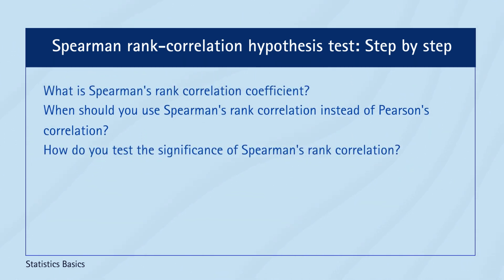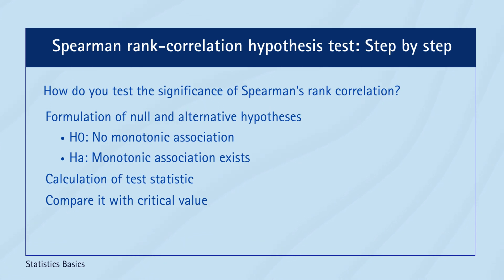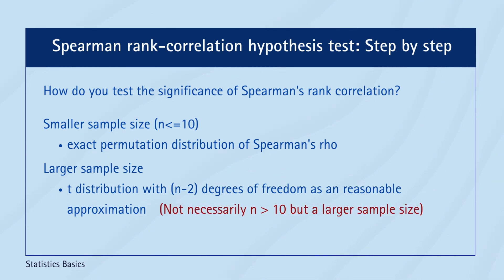The hypothesis test involves formulating null and alternative hypotheses, calculating the test statistic, and comparing it against a critical value obtained from the appropriate distribution or using a p-value approach. For smaller sample sizes, typically n less than or equal to 10, exact critical values are derived from the permutation distribution of Spearman's Correlation under the null hypothesis of no association. However, when dealing with larger samples, a t-distribution with n minus 2 degrees of freedom can also be used as a reasonable approximation.